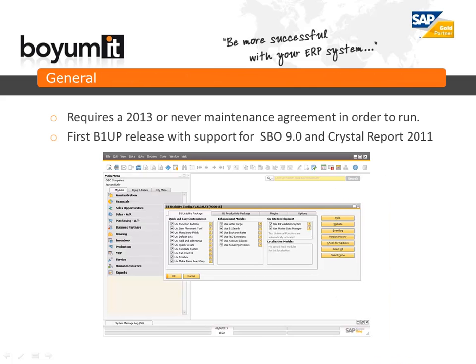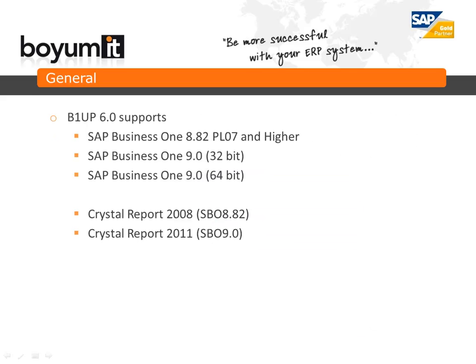In general, 6.0 is the first release in 2013, and therefore also requires a 2013 maintenance agreement in order to run. B1 UP 6.0 is also the first release with support for SAP Business One 9.0 and Crystal Report 2011. 6.0 supports SAP Business One 8.82, patch level 7 and higher, and we also support SAP Business One 9.0 in both 32 and 64 bits.